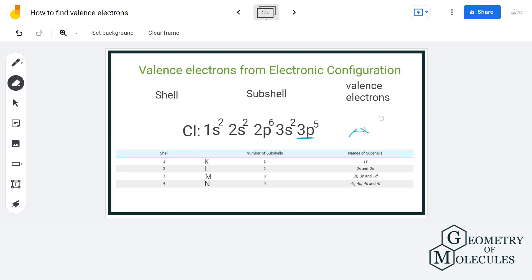The last shell that the electrons are entering is the M shell, that is shell number three. So the number of valence electrons becomes two in 3s and five in 3p that equals to seven. So there are seven valence electrons in chlorine.